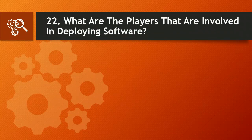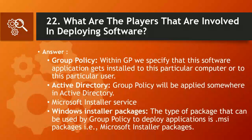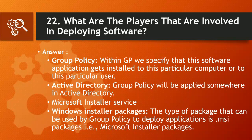Question 22: What are the players involved in deploying software? Answer: Group Policy — within GP we specify which software application gets installed to a particular computer or user. Active Directory — group policy will be applied somewhere in Active Directory. Microsoft Installer Service — Windows installer packages. The type of package that can be used by group policy to deploy applications is .MSI packages, i.e., Microsoft Installer packages.